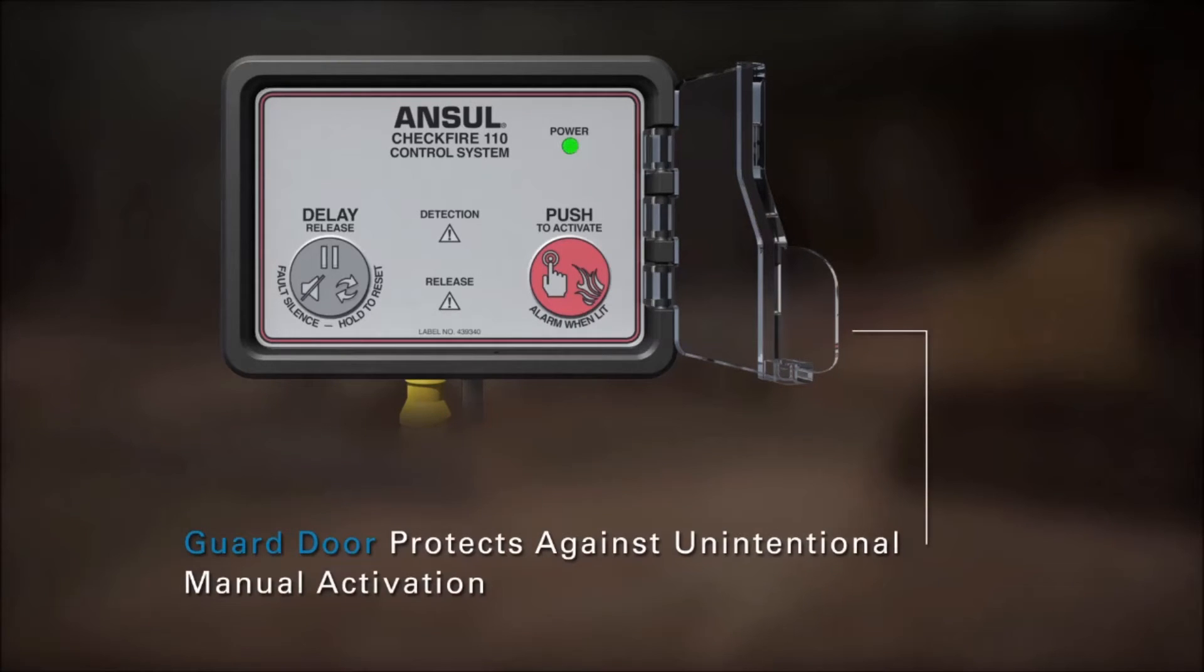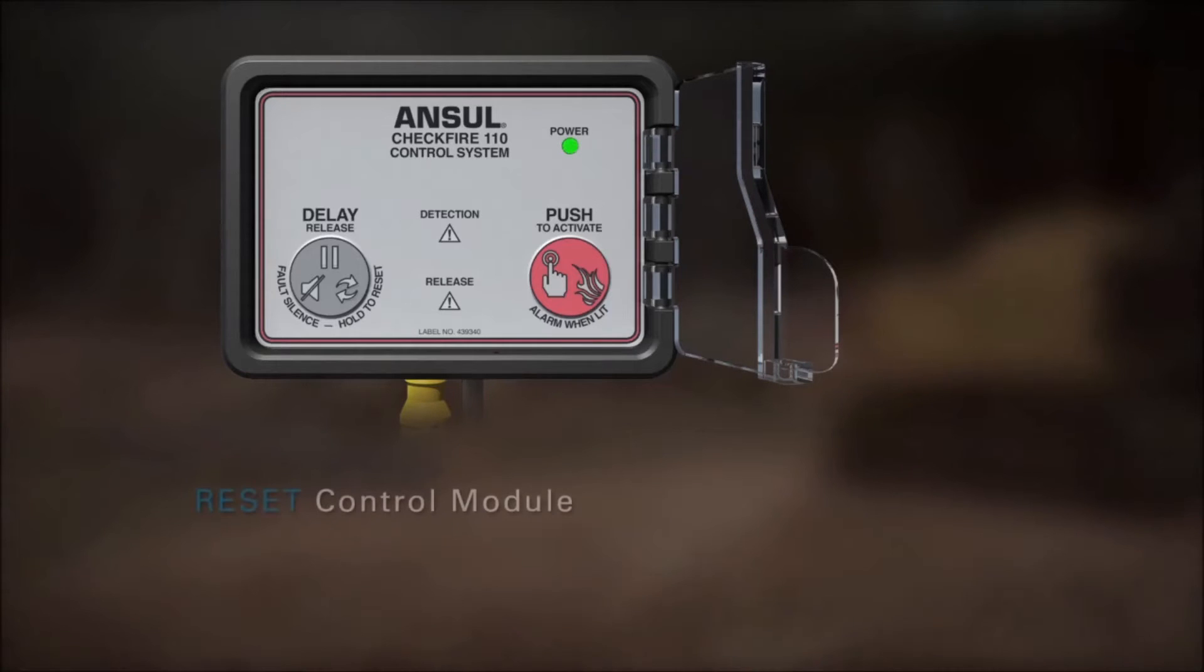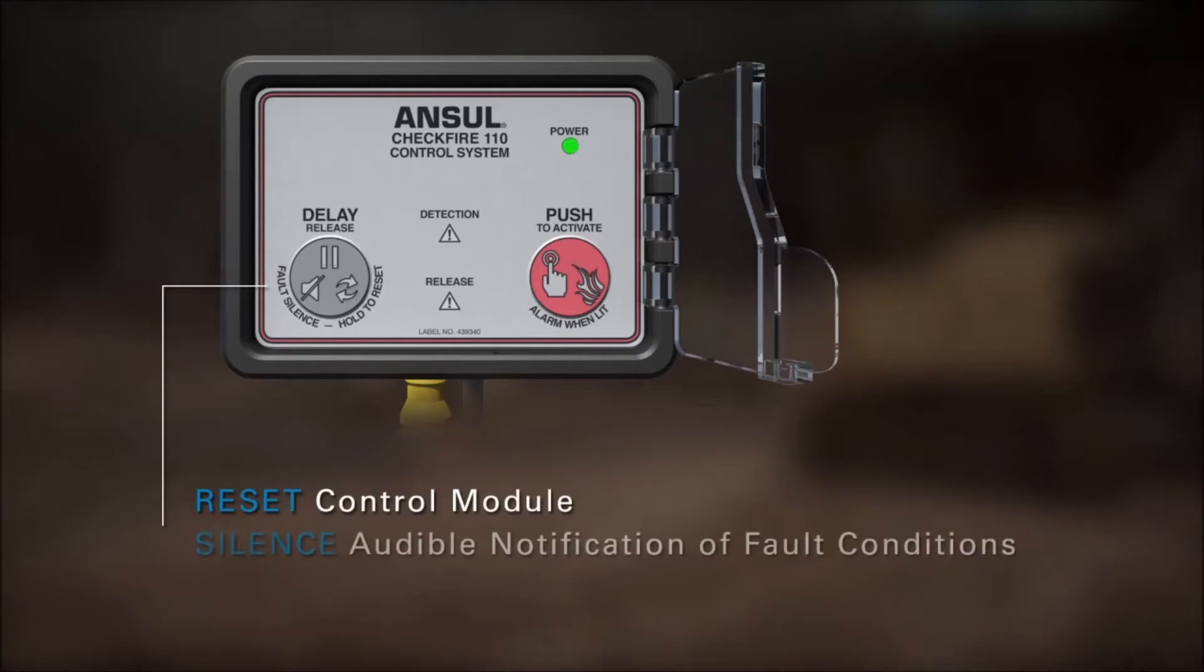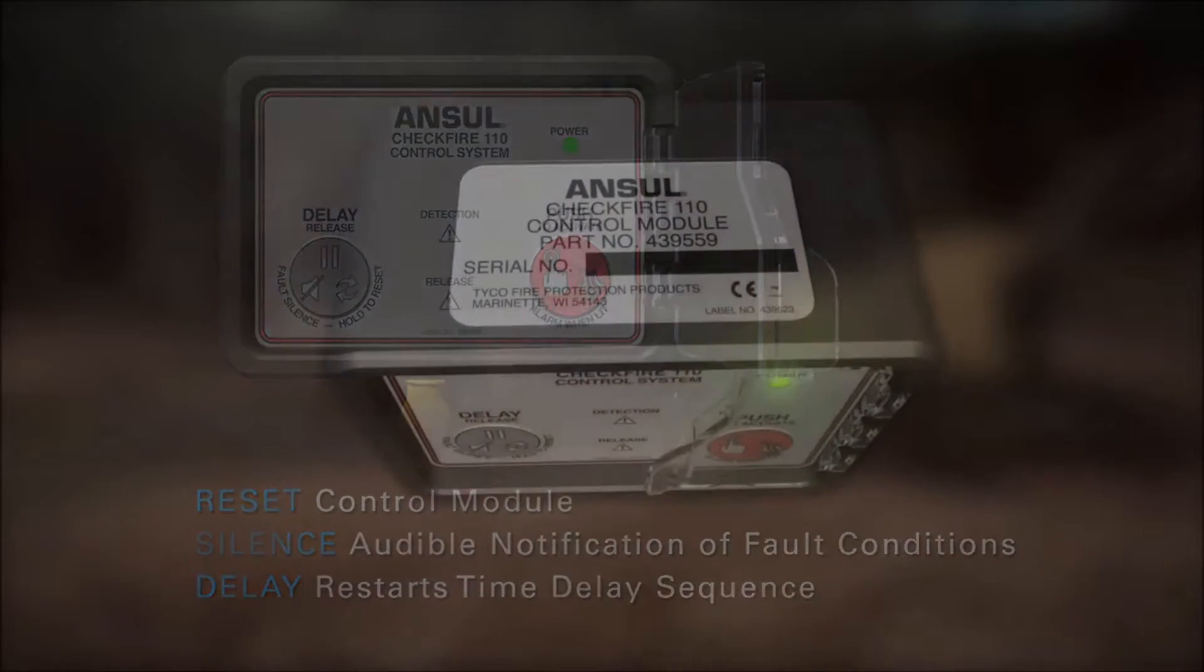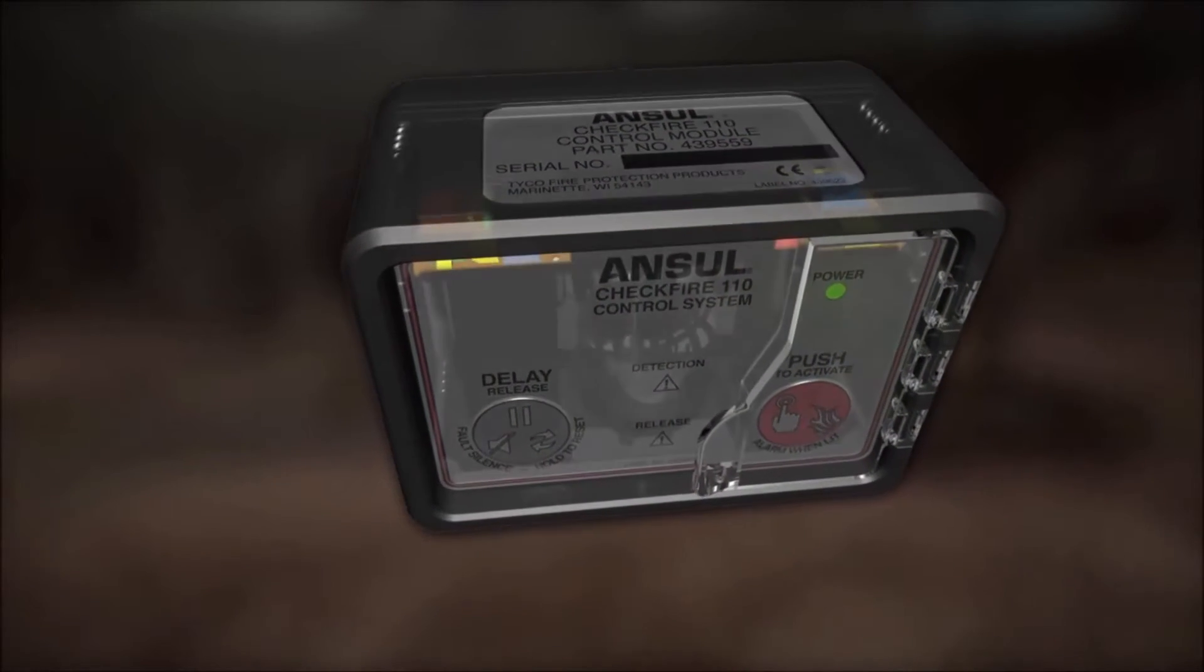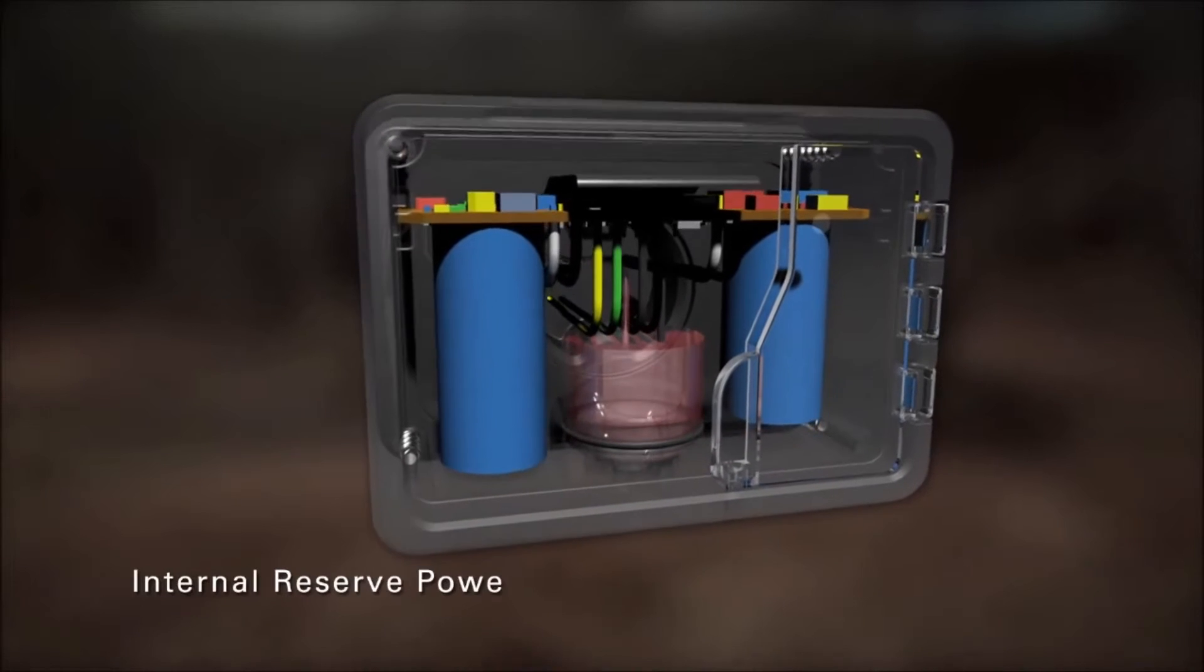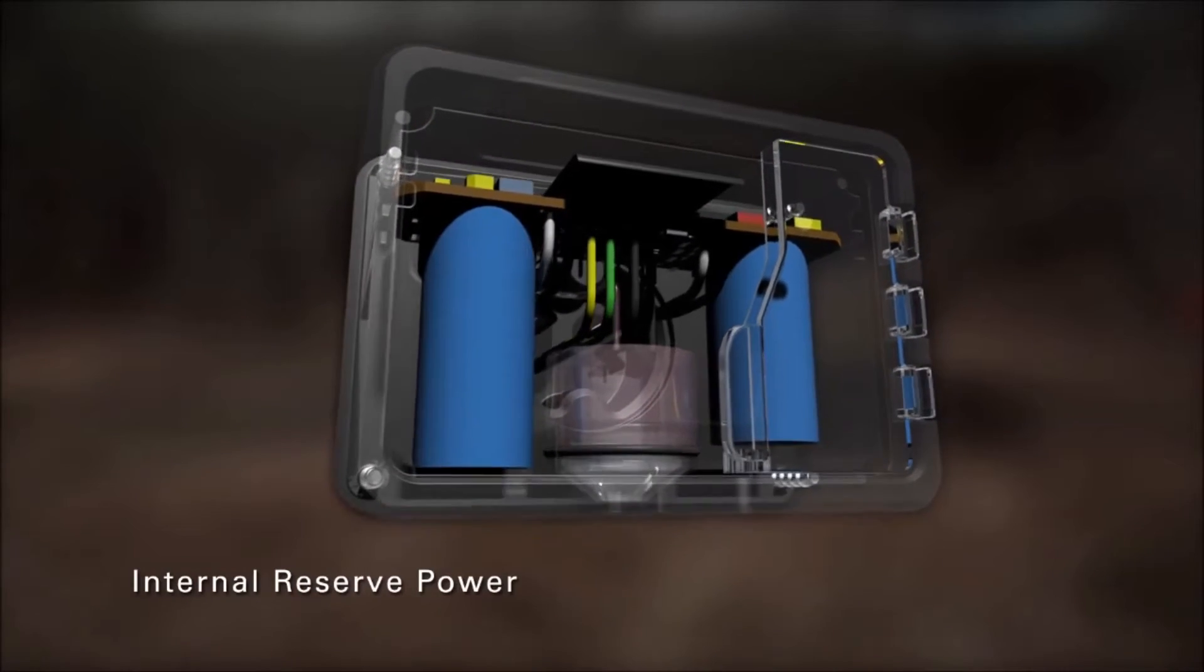The CheckFire 110 control module features a single button to reset, silence, or delay system release. If primary power from the vehicle is lost, the control module has an internal power source that is able to provide reserve power for up to 72 hours.